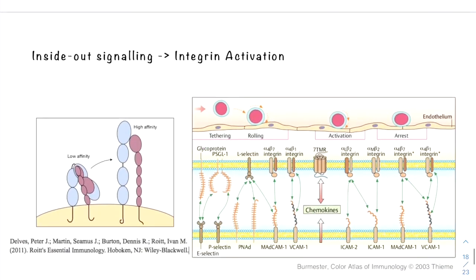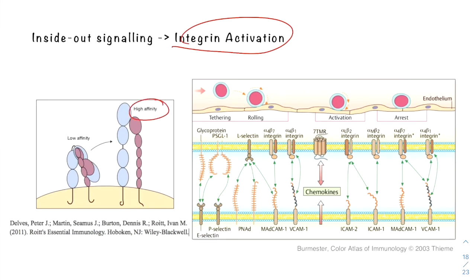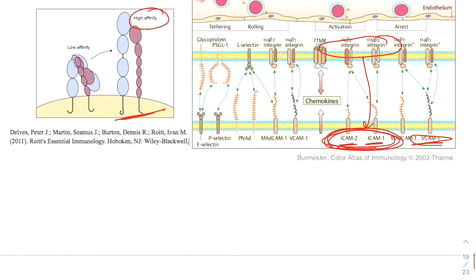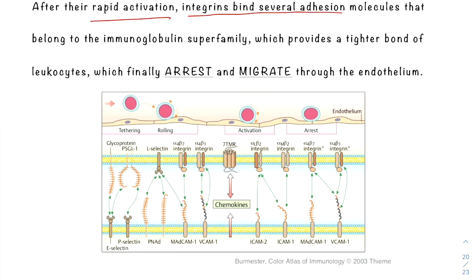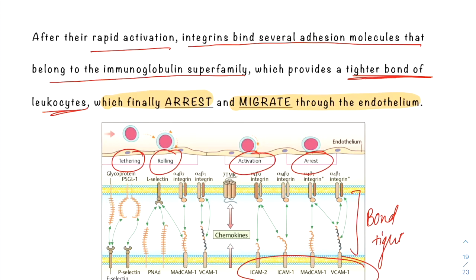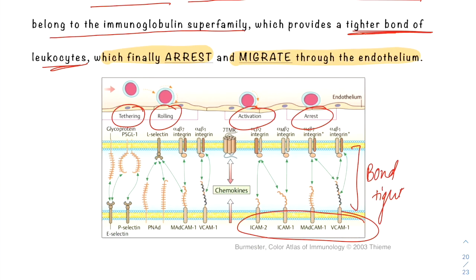The rapid activation of beta-2 integrins causes them to attain high affinity, allowing them to bind with immunoglobulin superfamily molecules like ICAM-1, ICAM-2, and VCAM-1. After rapid activation, the integrins bind to several immunoglobulin superfamily molecules which provide a tighter bond, finally arresting the leukocytes and enabling them to migrate through the endothelium to the site of infection or injury.